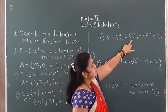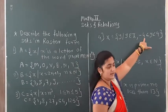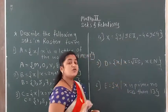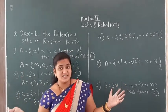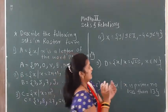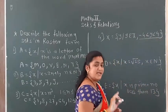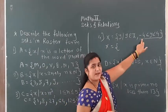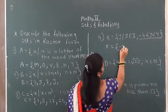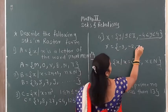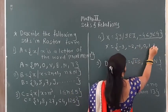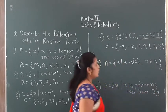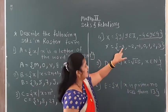Next, Set X = { y | y belongs to integer, −4 < y < 4 }. Integer ranges from minus infinity to plus infinity, but the condition is y is between −4 and 4. Converting: −4 < y means y starts from −3, and y < 4 means y goes up to 3. So the elements are: −3, −2, −1, 0, 1, 2, 3.